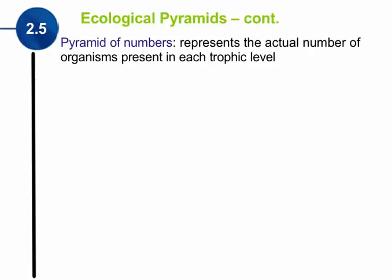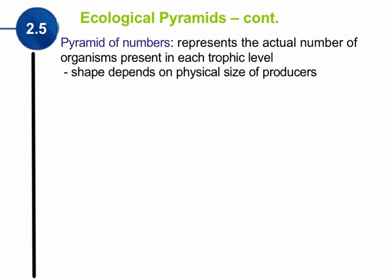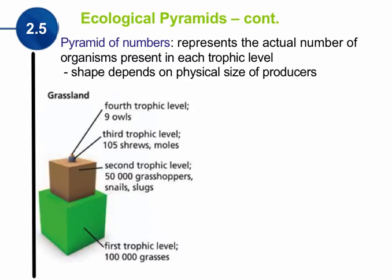Another kind of pyramid is called a pyramid of numbers. A pyramid of numbers is useful if we want the actual number of organisms present in each trophic level. The shape of a pyramid of numbers actually depends on the physical size of the producers, so we don't always have a traditional pyramid shape. Let's look at an example — the grassland.